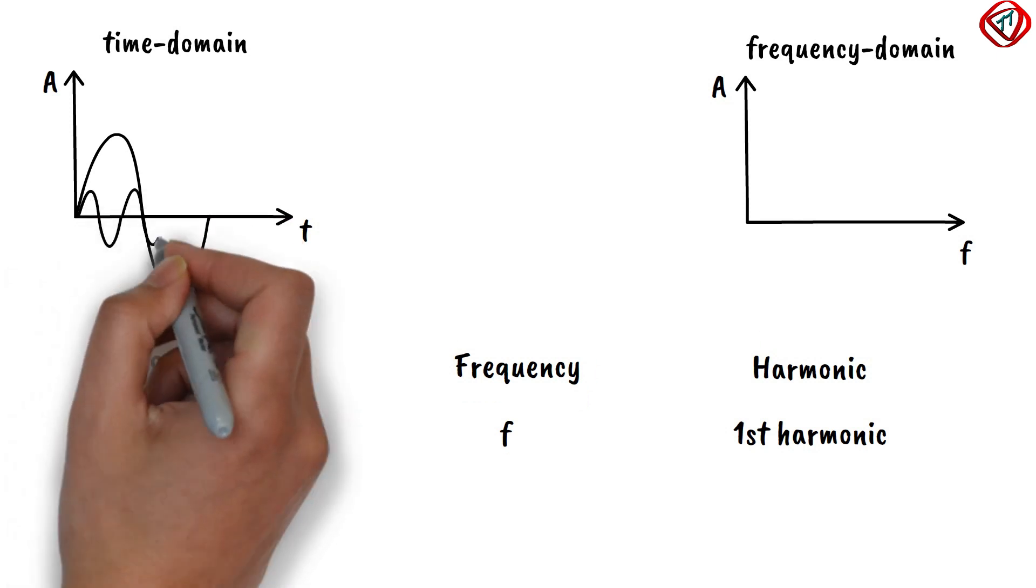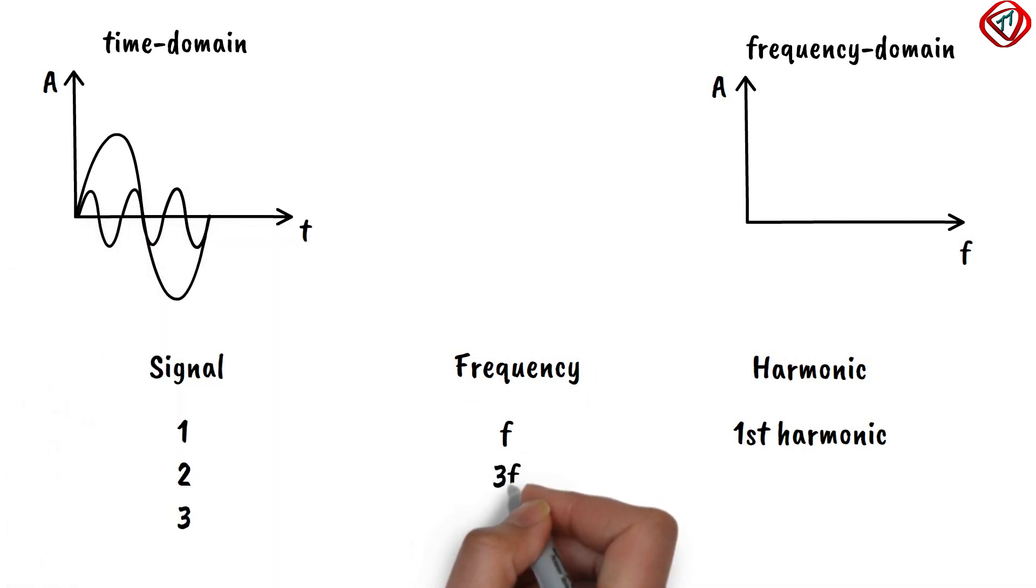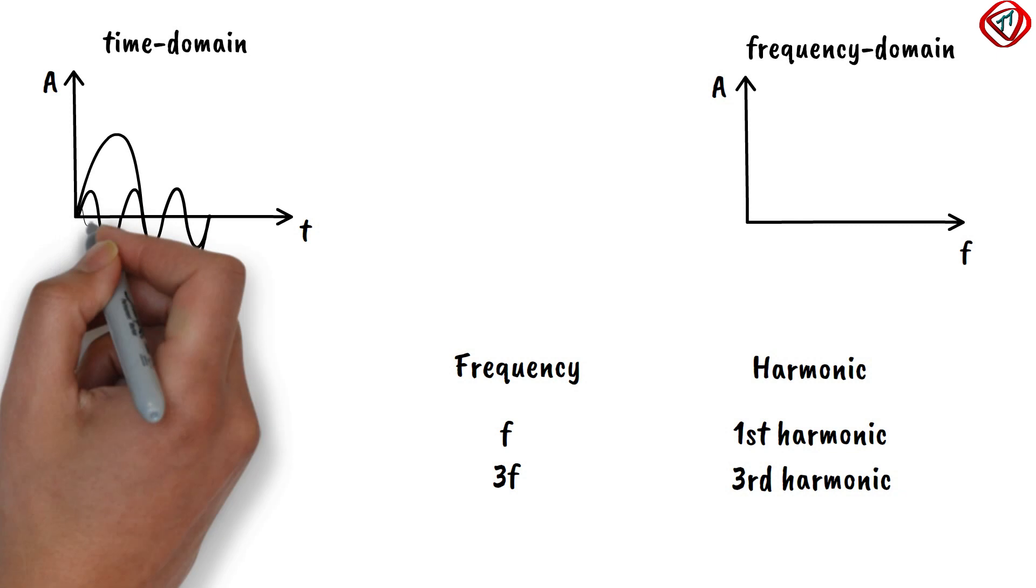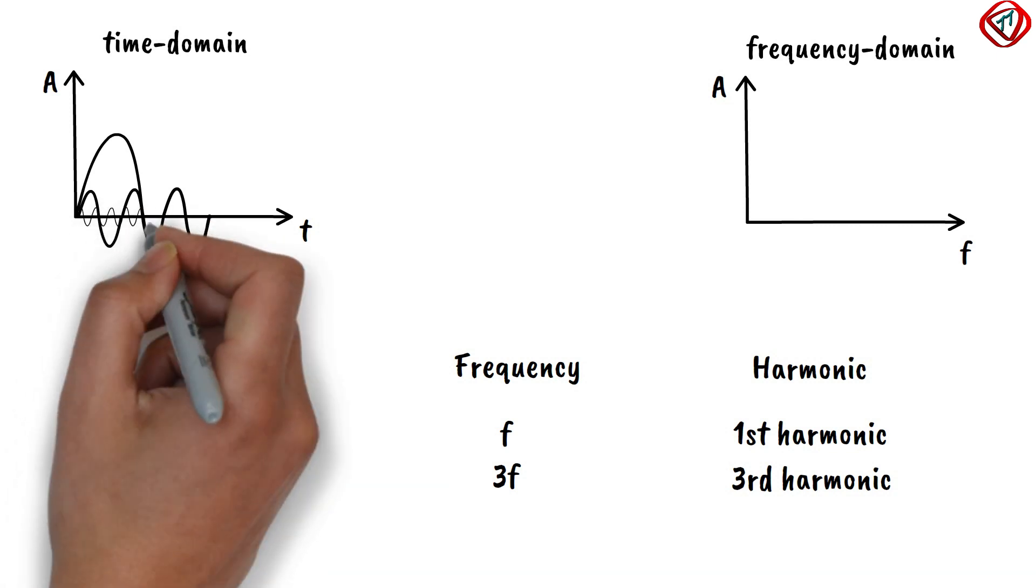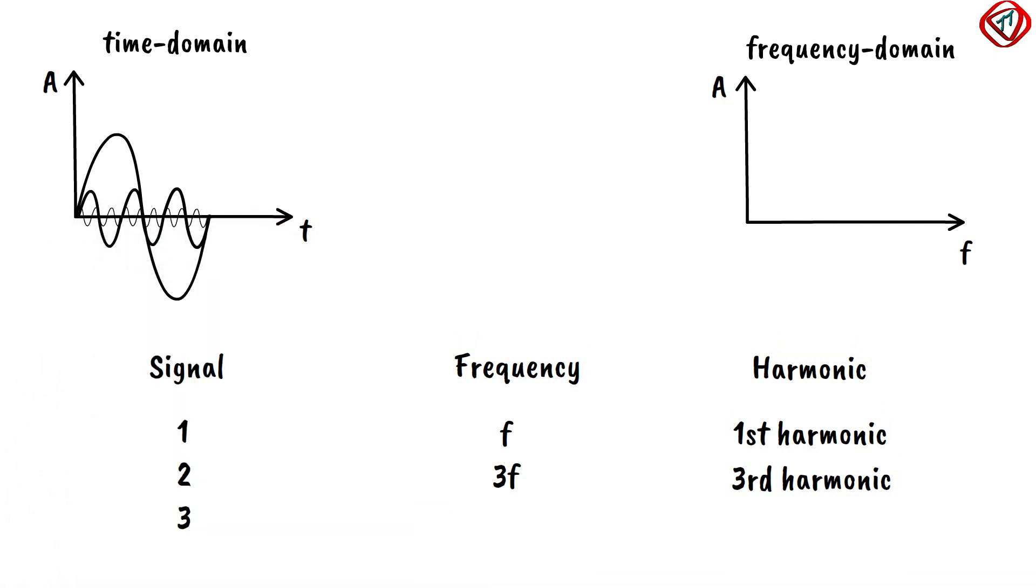The second signal has frequency 3f, that is three times the fundamental frequency. It is called the third harmonic. The third signal has frequency 9f, that is nine times the fundamental frequency. It is called the ninth harmonic.